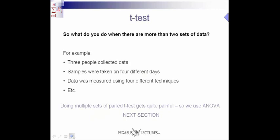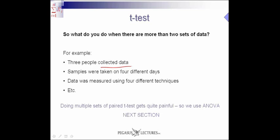The question you should ask yourself is: what happens if you have more than two sets of data? What if we have three different schools to compare, or five? Or three different drugs, or four different amounts of fertilizer? Or three people collecting data, samples taken on four different days, or data measured using four different techniques? Doing multiple sets of paired t-tests gets quite painful. So instead, we use a technique called ANOVA. In part six, we review ANOVA, and I look forward to seeing you then.